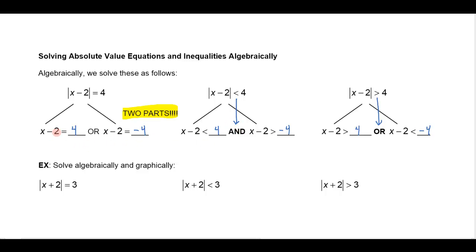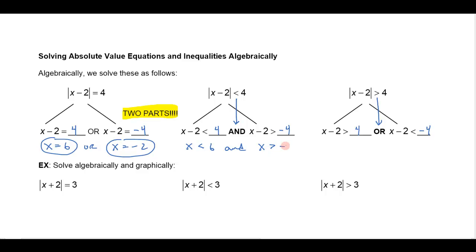Solving each part separately: x minus 2 equals 4 gives x equals 6, and x minus 2 equals negative 4 gives x equals negative 2. Both negative 2 and 6 are solutions to the original equation. Solving the less-than inequality gives x is less than 6 and x is greater than negative 2. Because of the word 'and,' I can combine this as the compound inequality negative 2 less than x less than 6 — the values between negative 2 and 6 make this true.